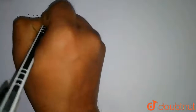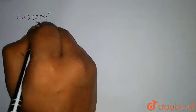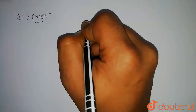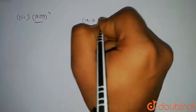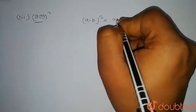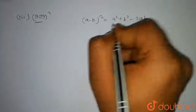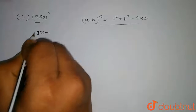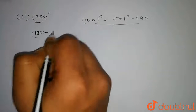Now in the third part of the question we have to find the value of 999². To find the value of 999² we will use the identity: (a − b)² = a² + b² − 2ab. We can write this as (1000 − 1)².